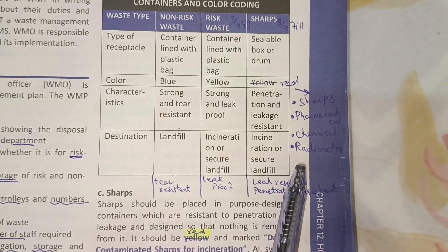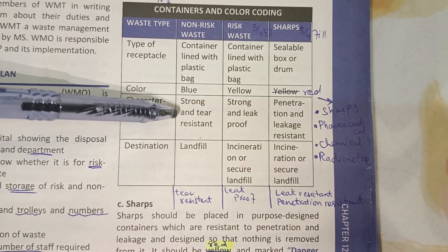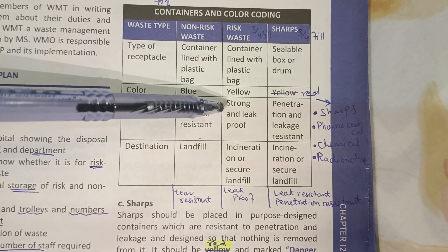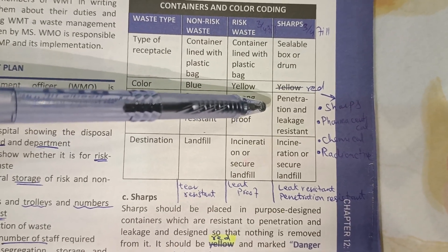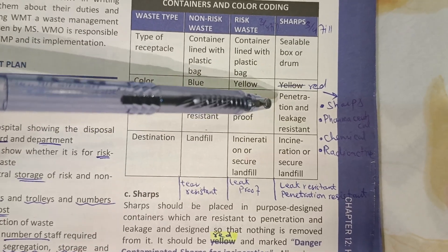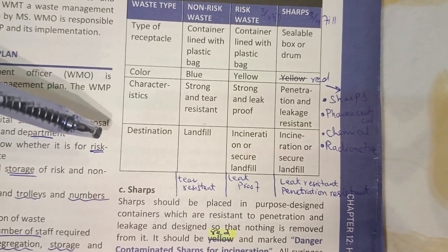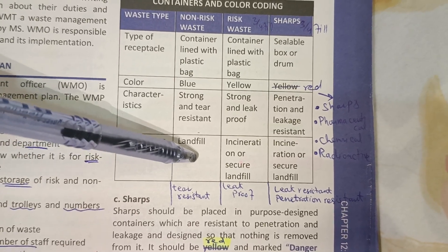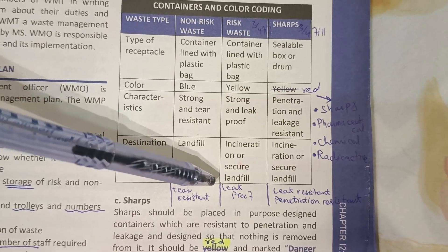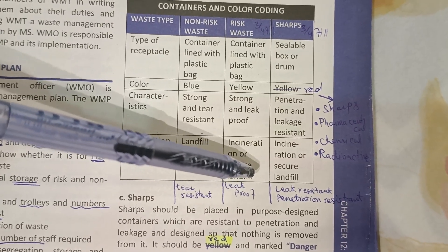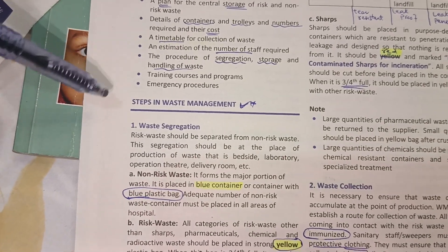Other waste types include sharps, pharmaceutical, chemical, and radioactive waste. Container characteristics: non-risk bags must be tear-resistant and strong; risk waste bags must be leak-proof; sharps containers must be leak-proof and penetration-resistant. Destination points: non-risk waste goes to landfill; risk waste goes to incineration or secure landfill; sharps also go to a secure destination.